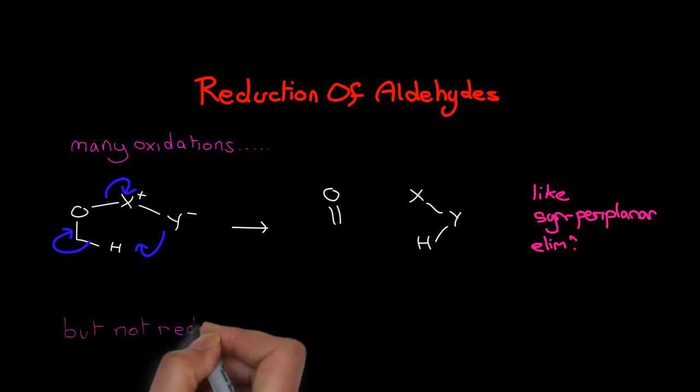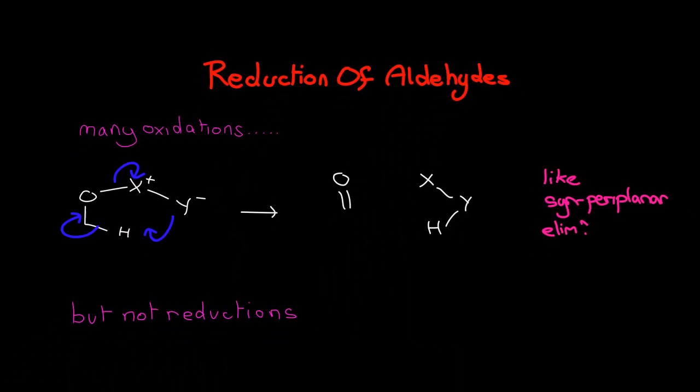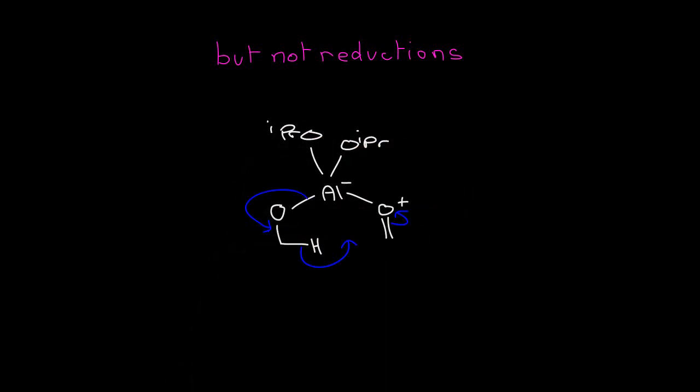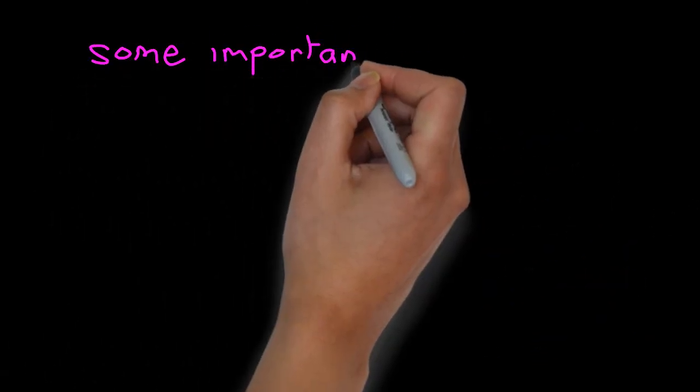But in fact, some of the most important reductions of aldehydes and ketones proceed via six-membered rings. These reduction reactions, of which this aluminum-mediated disproportionation process is probably the oldest known, are characterized by six-membered ring transition states.